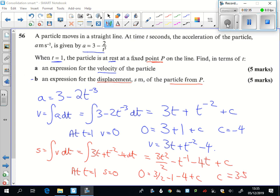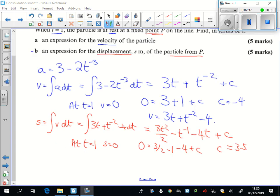And so my answer, just moving down a bit then, so s is equal to 3t squared over 2 minus 1 over t minus 4t plus 3 and a half, or 7 over 2, to finish that.